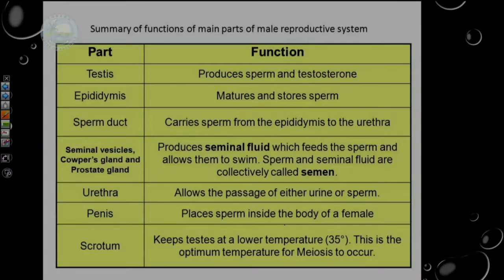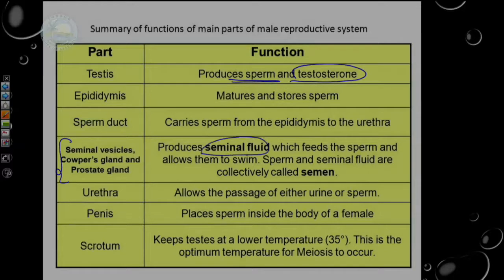The testes produce sperm and an important hormone called testosterone. The epididymis — that coiled tube at the back of the testes — stores the mature sperm until they are ready to be ejaculated. The sperm duct carries the sperm from the epididymis to the urethra. All the glands produce a fluid secreted into the vas deferens, and that fluid combined with sperm is what we eventually call semen. The urethra allows passage of sperm and urine out of the body, but not at the same time.